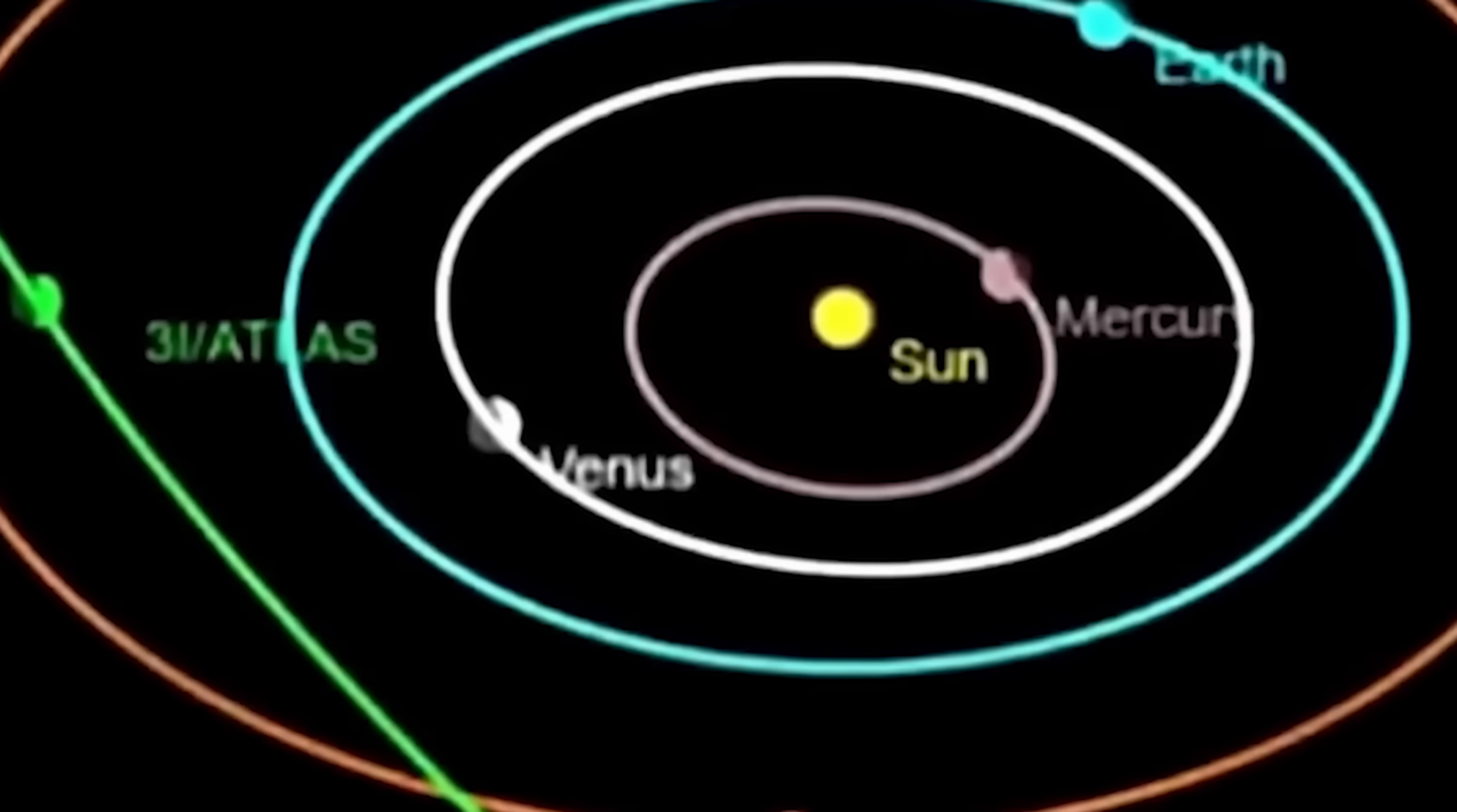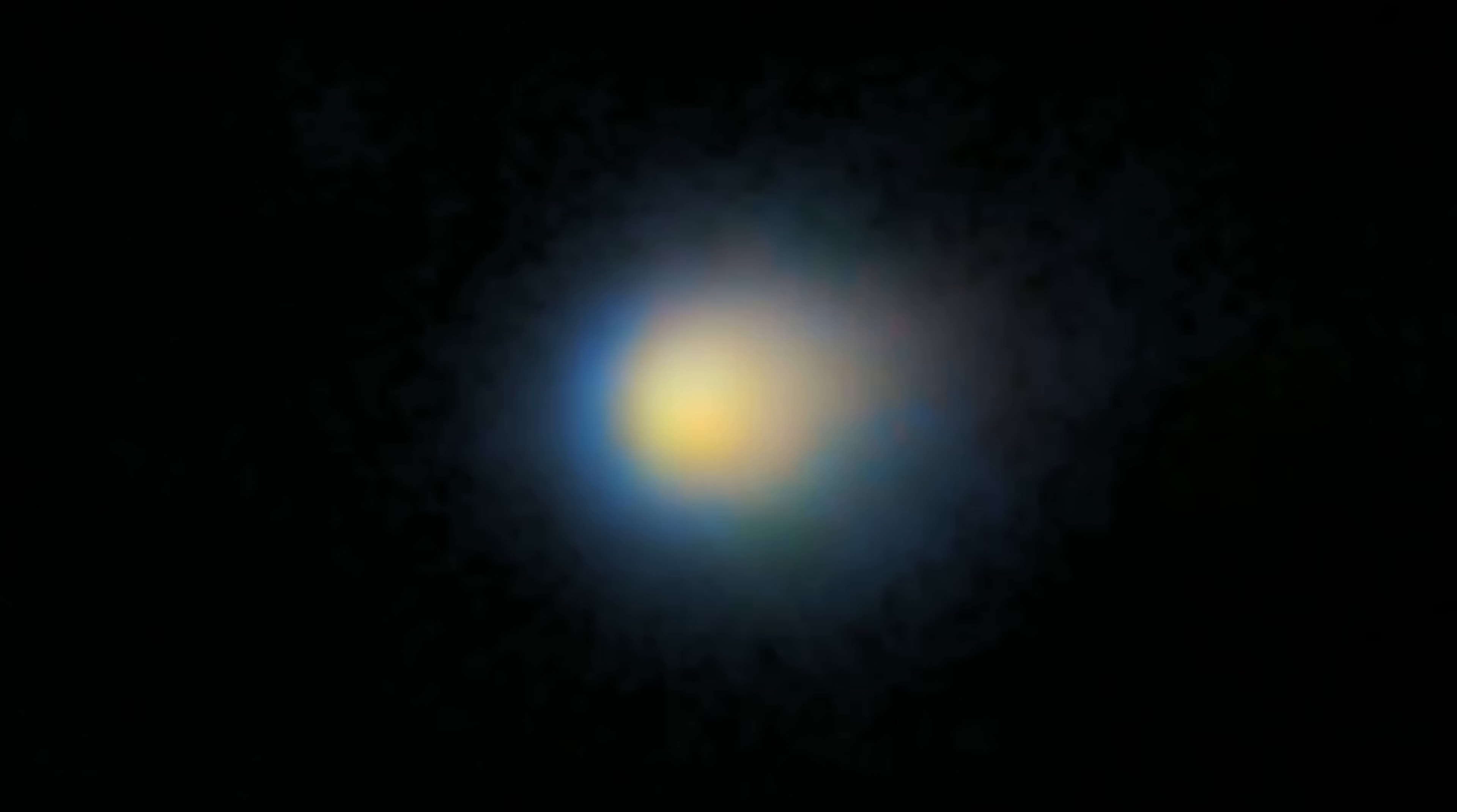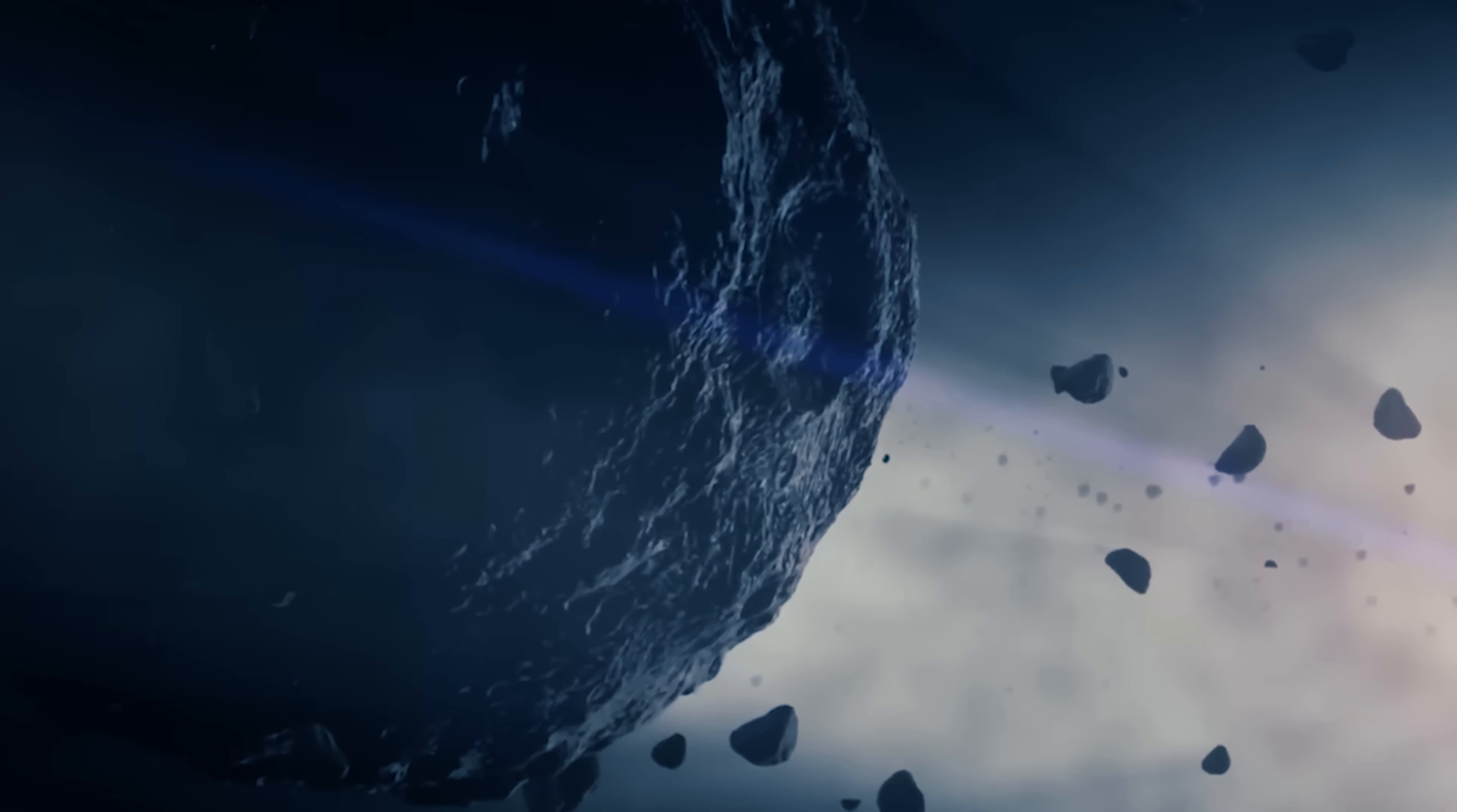Loeb argues that Atlas's course isn't just random chance. It's too sharp, too purposeful, almost like someone behind the wheel nudging it along a chosen path. That's what led him to float the daring idea. Maybe we're not watching a cosmic ice ball drift by, but a machine on a mission. In his essays, he even stretches the imagination further, painting a picture of a universe buzzing with civilizations that intentionally keep their voices down, hiding in plain sight. In his scenario, silent probes could be their way of peeking into neighborhoods like ours without ever announcing, hey, we're here.